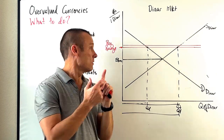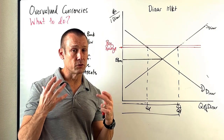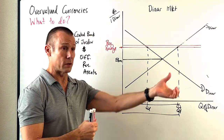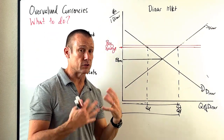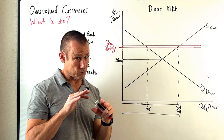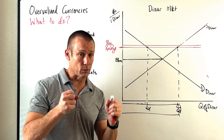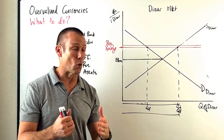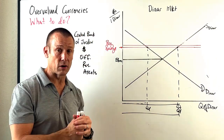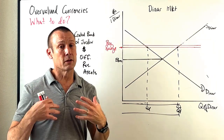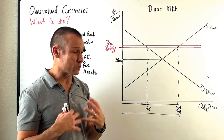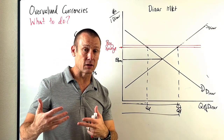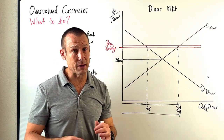Let's recap. Number one: use your official reserve assets — that's why they're there to fix this problem. Number two: borrow from abroad to get more dollars, though that puts you in foreign debt. Or raise interest rates, which decreases supply and increases demand — but that's contractionary monetary policy that will hurt your economy. Or do import controls like tariffs, pulling back supply — which could lead to trade wars. Or do capital controls, also pulling supply back, but limiting the investment options of your citizens.